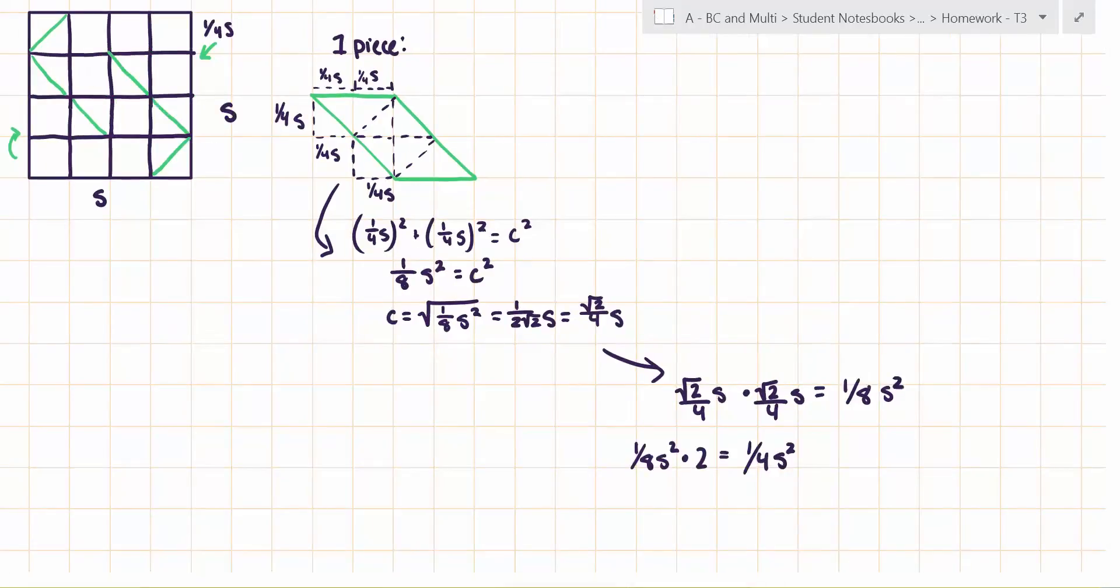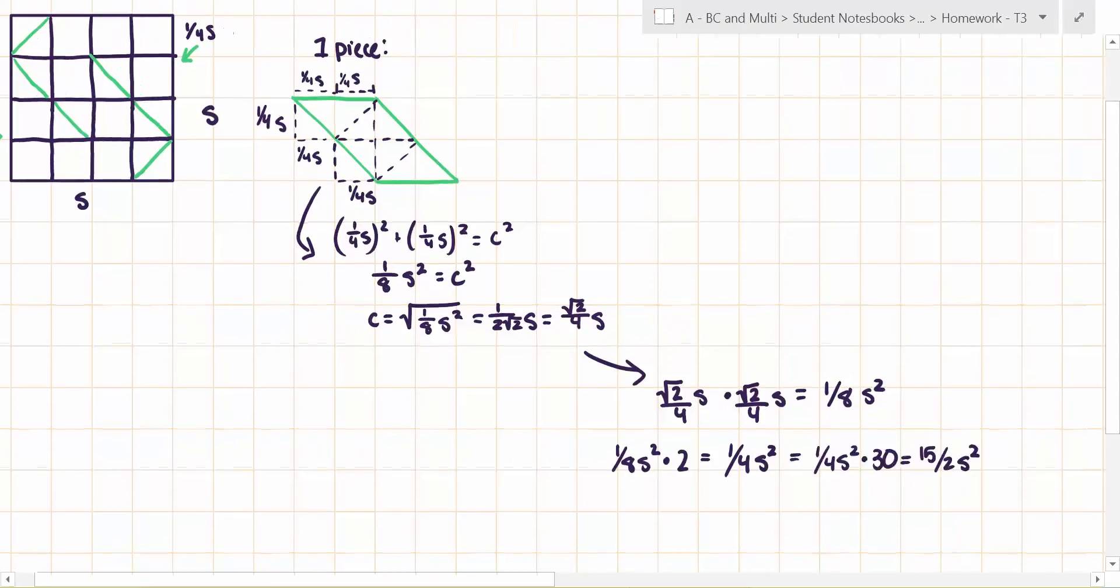And two of these squares are used to create one spike, so we're going to multiply this area by 2, and we get 1/4 S². And because it's a 30-point star, we're going to multiply this surface area of one spike by 30, and we get 15/2 S². And that's the surface area of a 30-point star.